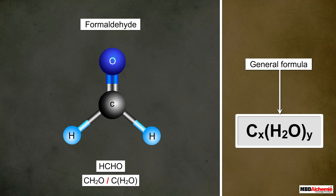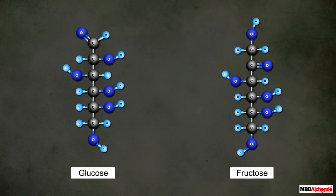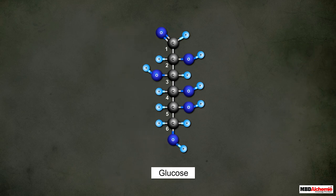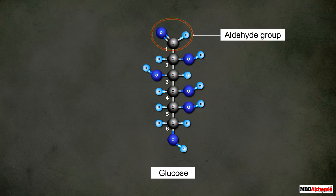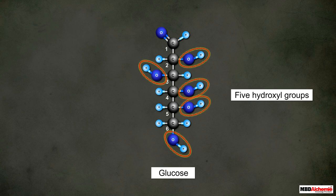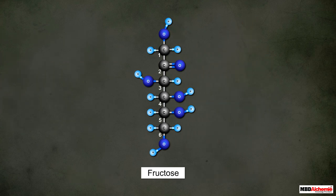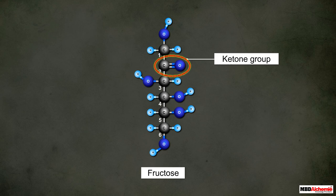Let us learn about these common characteristics of carbohydrates one by one. For that we have to get back to the structure of glucose and fructose again. A glucose molecule, as you can see, has two functional groups: it has one aldehyde group attached to the first carbon and five hydroxyl groups attached to the rest of the five carbon atoms.